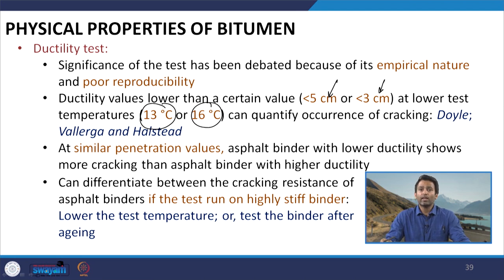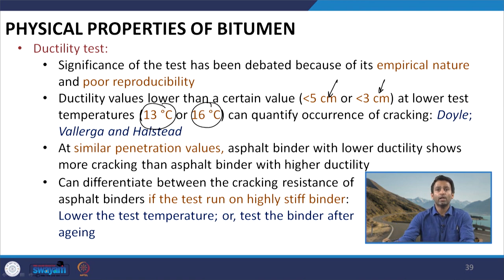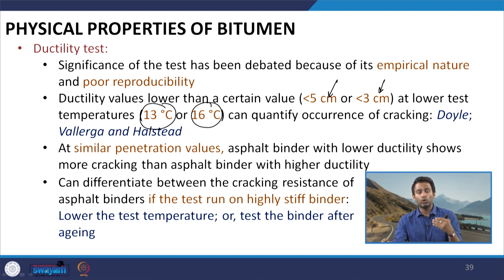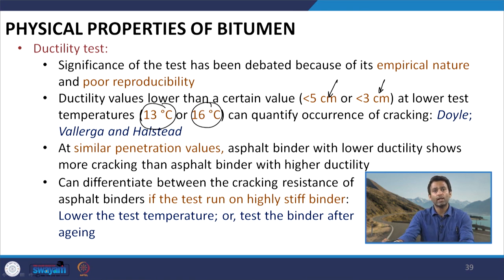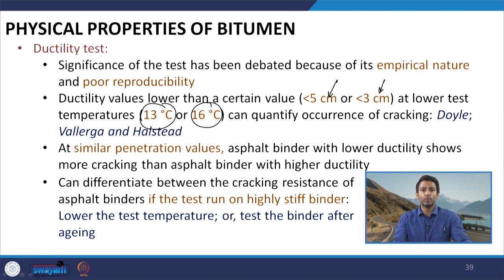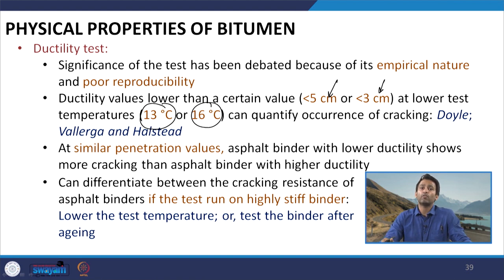A general recommendation in the literature is that this test should ideally be done on stiff binder — either at lower temperatures, or at 25°C under aged conditions. In IS 73:2013, which is used in India for characterizing bitumen properties, the ductility test is done on short-term aged specimens. This is likely one reason why aged specimens are used instead of unaged specimens for this test.